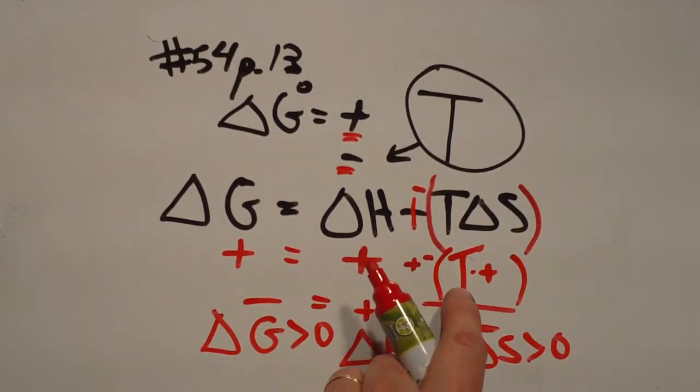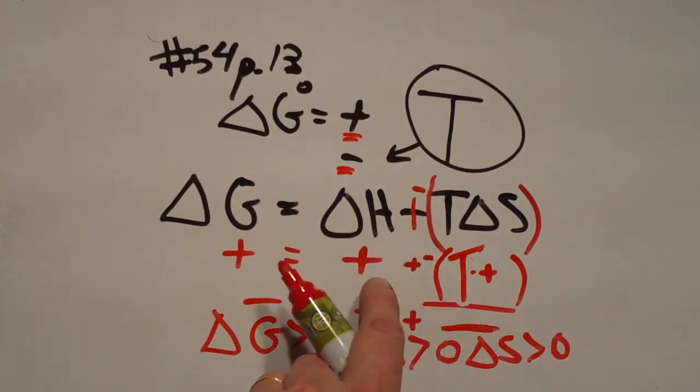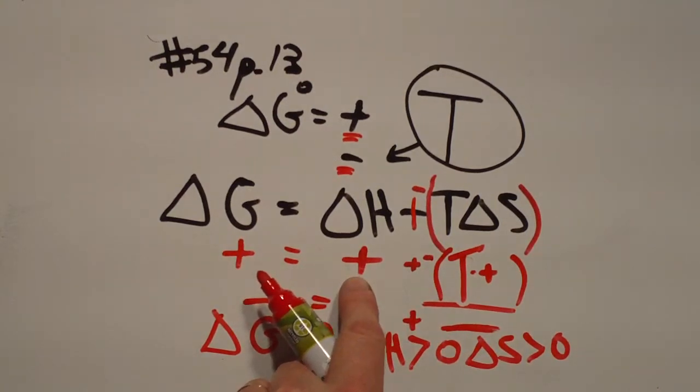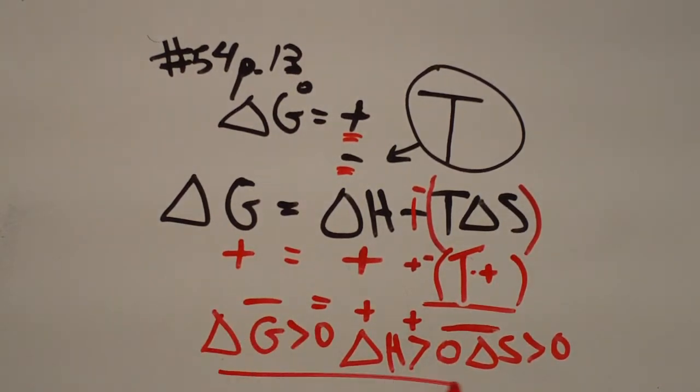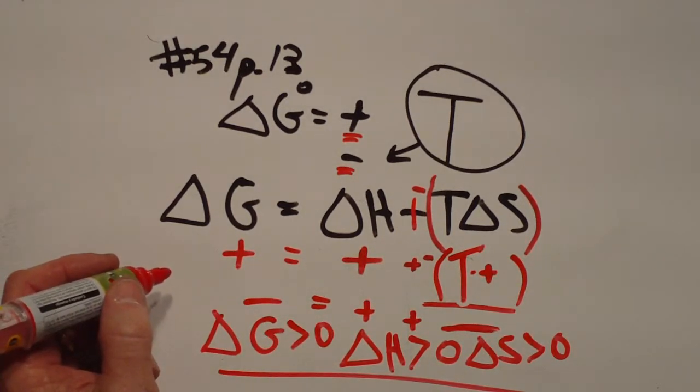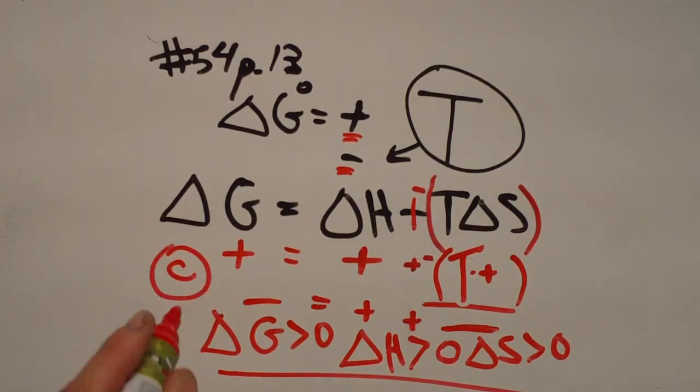And it's only when the T gets large enough that the opposite of that sign makes this term large enough to compete in addition with that term to throw this negative. So all three were greater than zero to start with. And when I look at the problem, it seems like the answer is C.